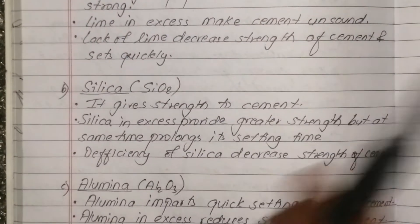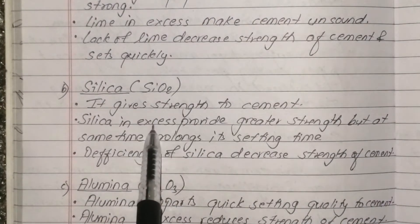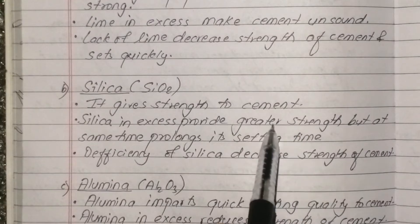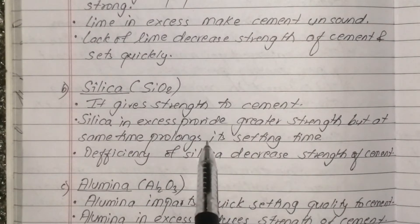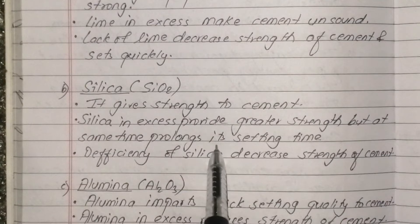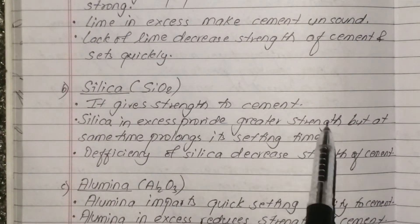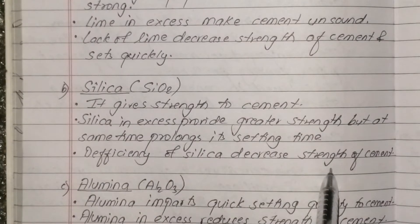Silica gives strength to the cement. If silica is in excess, it increases the setting time of cement - for example, from 2 hours up to 5 or 10 hours. Silica and lime together contribute to the continuance of cement strength.